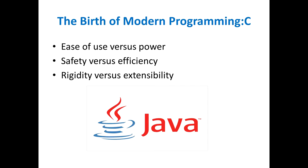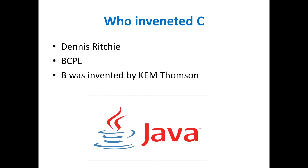C was invented and first implemented by Dennis Ritchie. C was the result of a development process that started with an older language called BCPL, developed by Martin Richards. BCPL influenced a language called B, invented by Ken Thompson, which led to the development of C in the 1970s. For many years the de facto standard for C was the one supplied with the UNIX operating system and described in 'The C Programming Language' by Kernighan and Ritchie. C was formally standardized in December 1989 when the American National Standards Institute — ANSI — standard for C was adopted.